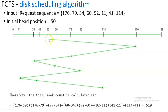Starting from 50, the first number to visit as per the sequence is 176. After 176, the next in sequence is 79, so you go from 176 to 79. An arrow mark must be there to indicate at which number you are residing. After 79 it is 34, then 60, then 92, then 11, then 41, and finally 114. This is how you work through the First Come First Serve disk scheduling algorithm.